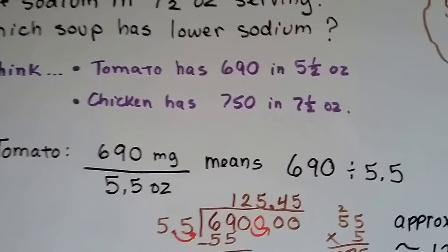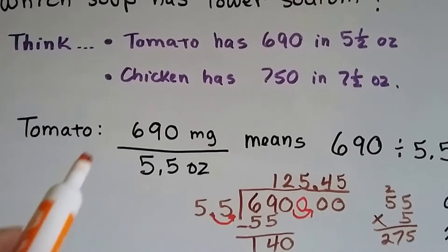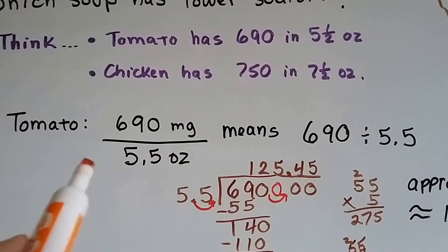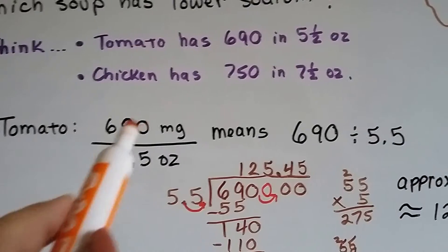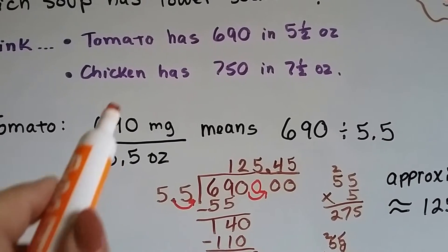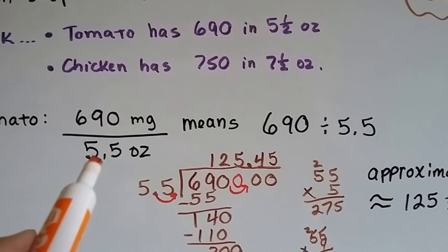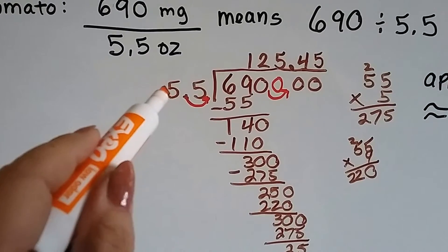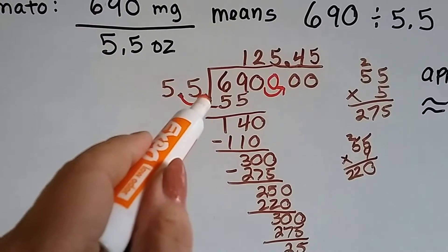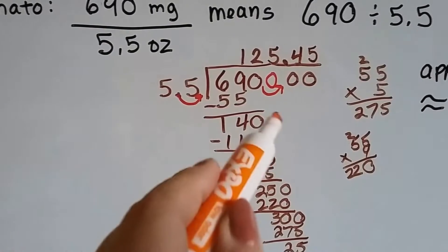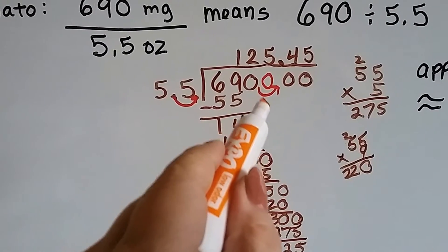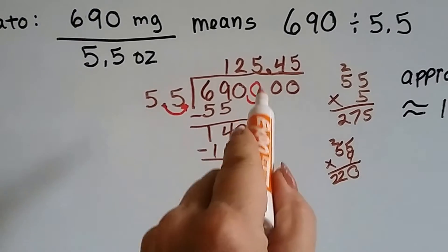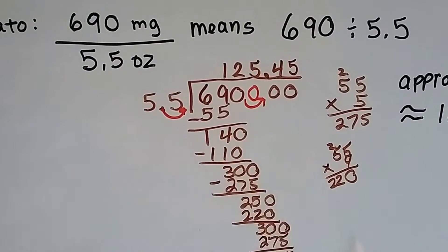Tomato has 690 in five-and-a-half ounces. So that means there's 690 milligrams of sodium to five-and-a-half ounces. And we need to find out what it is to one ounce. So we're going to divide 690 by 5.5. And we do. And when we divide by the 5.5, we need to move that 0.5 over so that the decimal point is behind the five. But that means we need to move it from the 690 over one space. So we have to put a zero there as a placeholder. And then the decimal point goes straight up into the quotient.